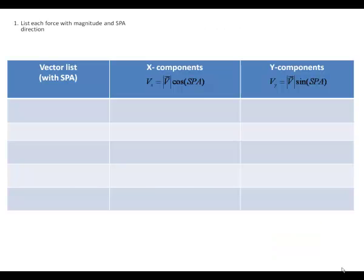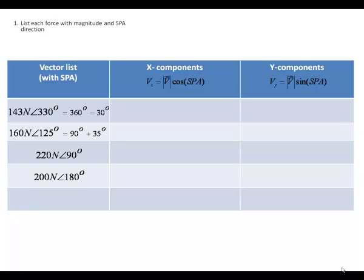For our course and for mechanics we are going to need a numerical technique though. So it's easiest to do that in a table where we'll list all our vectors with their standard position angles, and then we'll calculate and manipulate both the x and the y components. Our first step is to list each of the forces with their magnitude and their standard position angle direction. For the four vectors we had before, here are each of them with their magnitudes and their standard position angles.